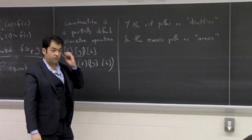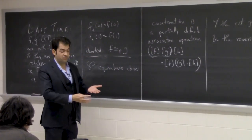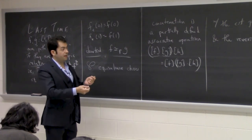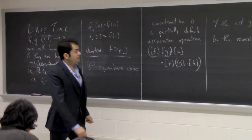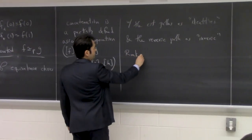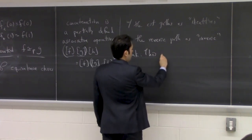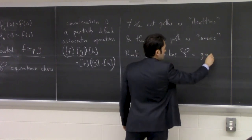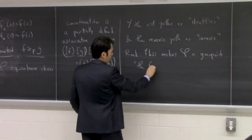I put 'inverse' in quotes because there's not a unique identity, so what do we mean by inverse? What we mean is that you get an inverse on the left or the right — it just gives you the appropriate identity. And as a remark, this structure is called a groupoid, and it's called the fundamental groupoid.